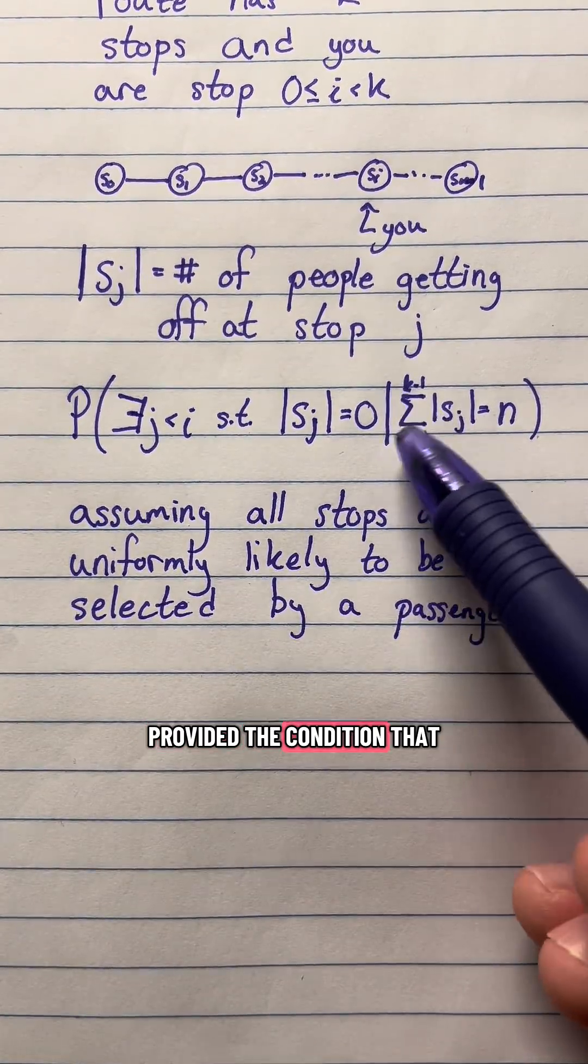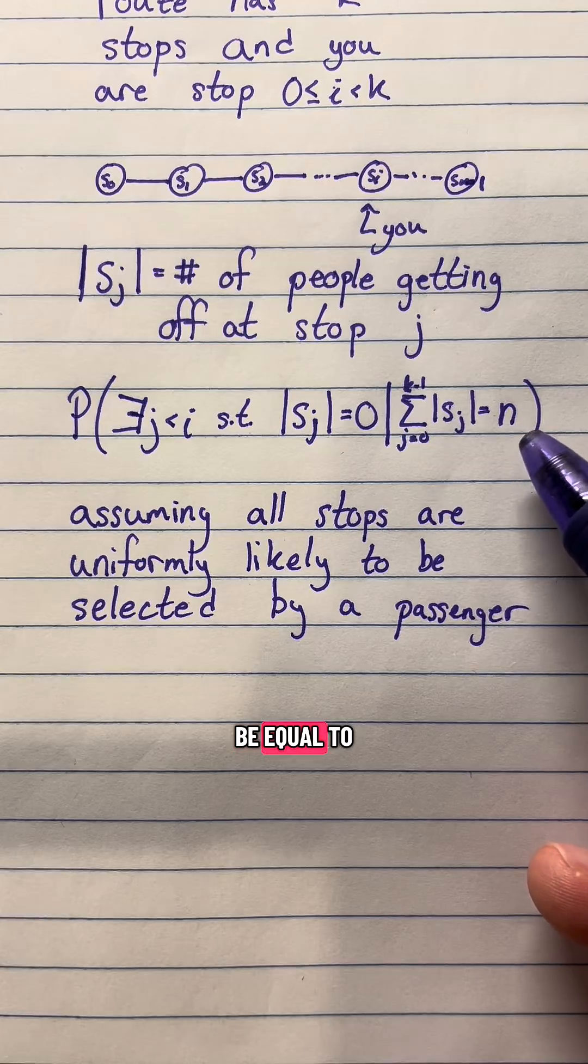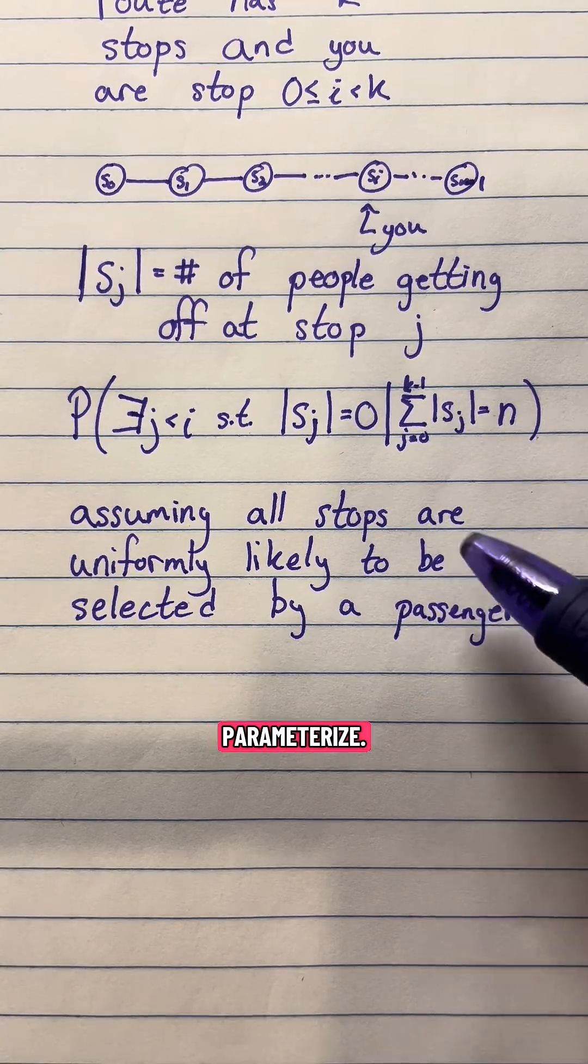And we are provided the condition that if you add up all of the stops and the amount of people who are getting off of those stops, it's going to be equal to some value of n which we'll just parameterize.